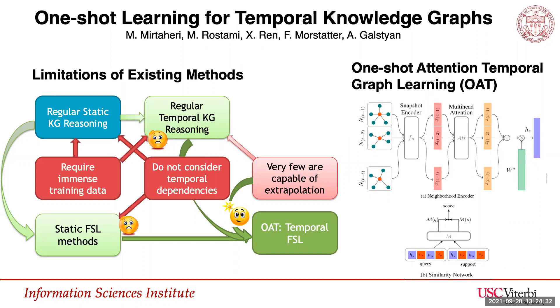Furthermore, our model improves few-shot episodic training to learn a similarity metric between a training entity pair and a given query entity pair, which indicates the likelihood of a given relation between the query entity pair.